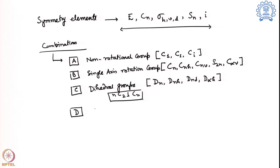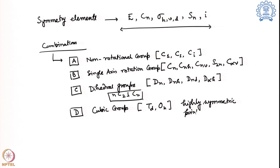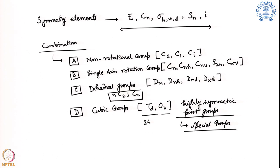And then lastly we can have cubic groups, which belong to tetrahedral and octahedral — highly symmetric point groups. We can call them spatial groups because tetrahedral and octahedral have 24 and 48 symmetry elements respectively, making them very highly symmetric. These are the four different groups that we can divide molecules into.